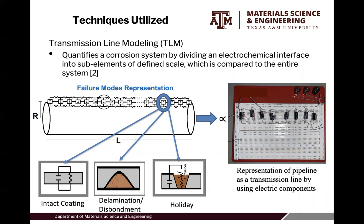With our TLM, we're able to simulate the experiment in software. In this software, we have parameters for the resistance of the coating and the pipe, and we're able to create failure modes. Failure modes include delamination or disbondment, and we can also create holidays. Using the TLM, we were able to create physical electrical components of the TLM model. As you can see, both are proportionate to each other, and this electrical component simulates a 40-kilometer pipeline with failure modes.